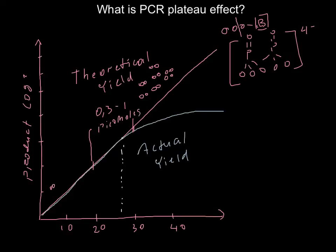The optimal concentration range is between 0.3 and 1 picomoles — where picomoles stands for 10 to the minus 12 moles, i.e., one trillionth of a mole. If we exceed this concentration, we have already reached the plateau and will not get more desirable product.